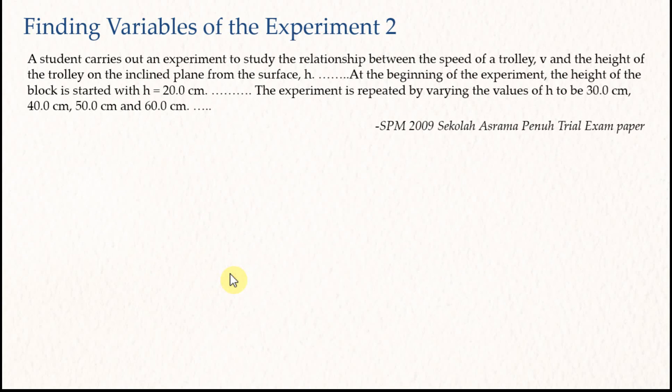Let's have a look at this question. This is the SPM 2009 Sekolah Asrama Berasrama Penuh trial exam paper. A student carries out an experiment to study the relationship between the speed of a trolley v and the height of the trolley on the inclined plane from the surface h. At the beginning of the experiment, the height of the block is started at h equal to 20 cm. The experiment is repeated by varying the values of h to be 30, 40, 50, and 60 cm.